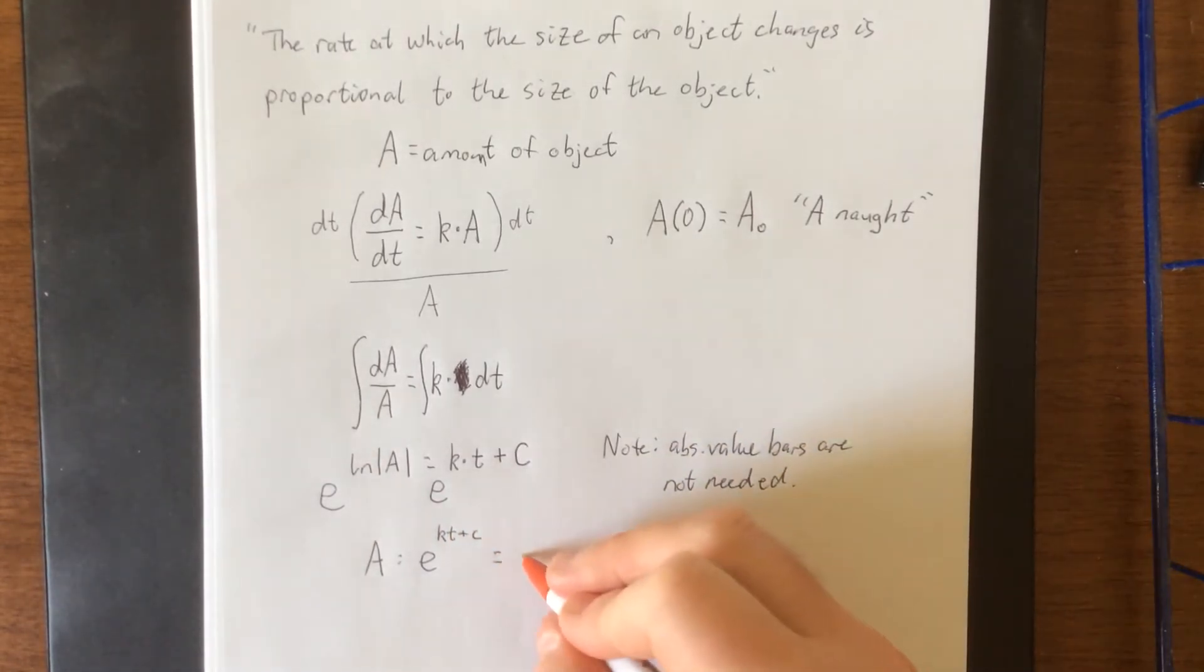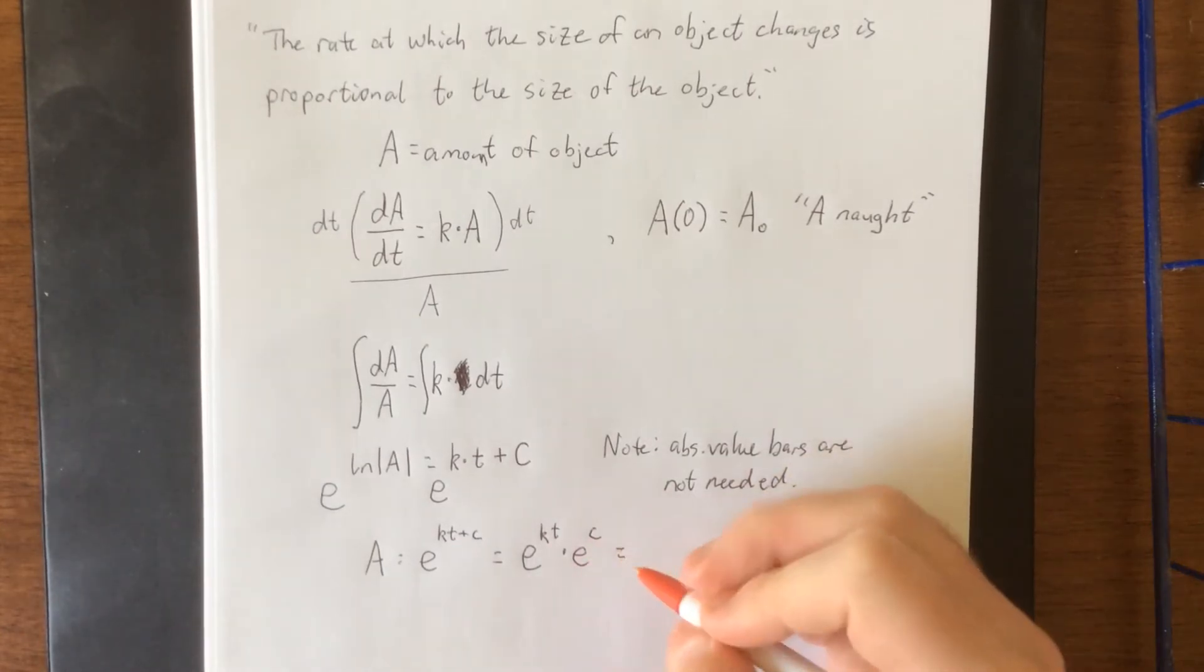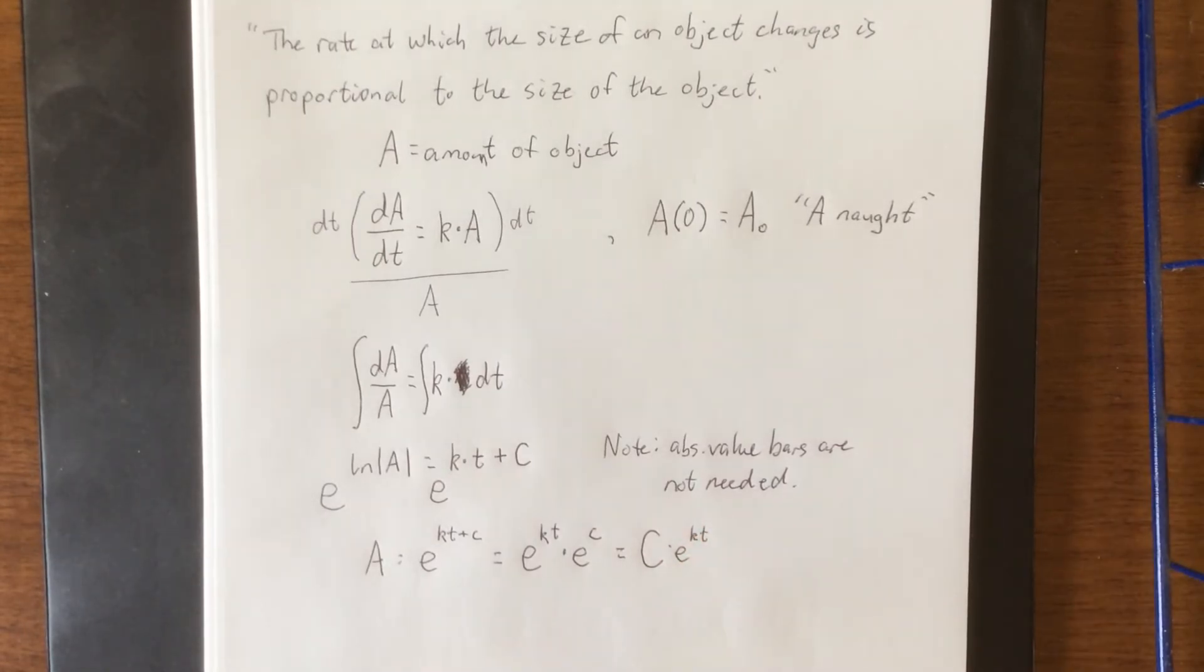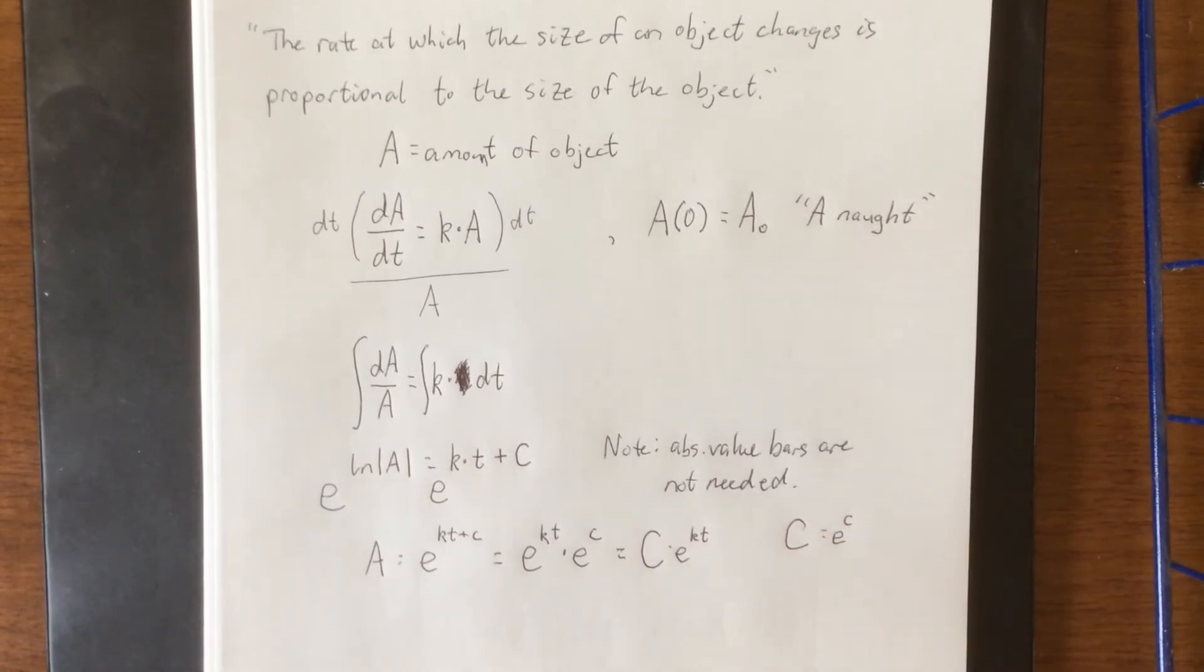However, we can apply the same property that we used in a previous problem to refer to this as times e to the c, and then we'll just refer to e to the c as some other letter like capital C. Capital C is going to be equal to e raised to the lowercase c power.